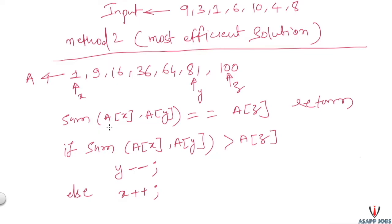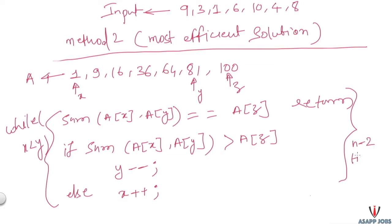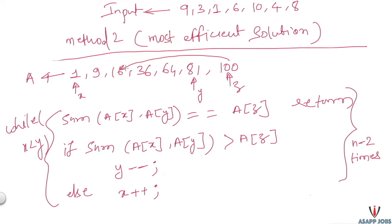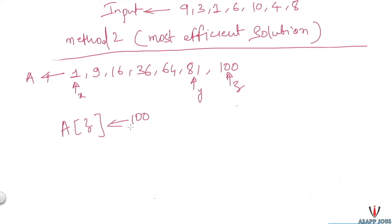To search for the pair x and y: we add the values at x and y. If x + y equals z, we return true. If the sum is greater than z, we decrement the y index. If the sum is less than z, we increment the x index. We keep doing this while x is less than y. This operation is repeated n - 2 times as z can go down to the second index.